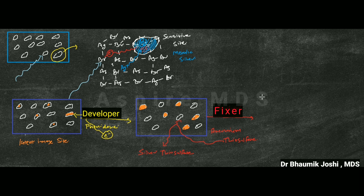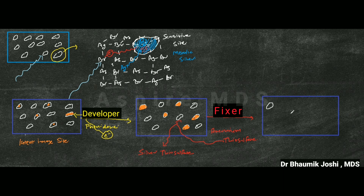This silver thiosulphate, when you wash the film, will be drained out of the film surface. After the fixing process is done and the film is washed, all the silver thiosulphate is washed out, and the only structures remaining on the x-ray film will be where latent image formation had taken place.